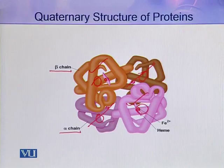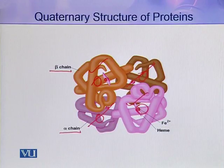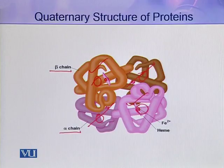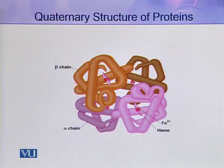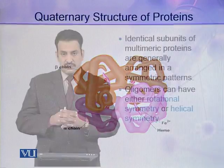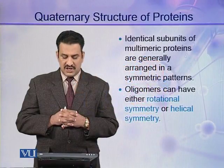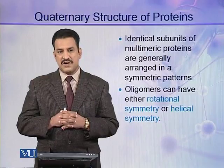It contains four subunits. But some scientists say that if two or more subunits are identical, those identical subunits are regarded as a single protomer. In this way, you can say hemoglobin is a dimer. So this is at its quaternary level of organization. Identical subunits of multimeric proteins are generally arranged in a symmetric pattern.